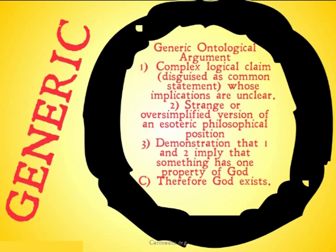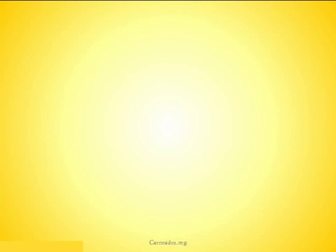You probably have a sense of some of the objections I'm going to offer to this generic ontological argument. Before anyone steps up and says that this is a straw man — yes, I realize no one would make the argument I've just made. What I'm doing is merely categorizing a couple of the flaws that permeate a number of ontological arguments. Of course, the ontological arguments on their own are stronger than what I've just stated, because what I've just stated contains all of the problems, whereas each only contains one or two.